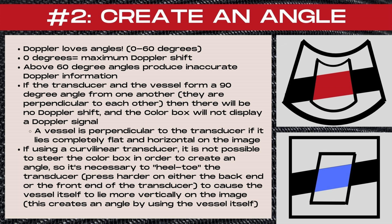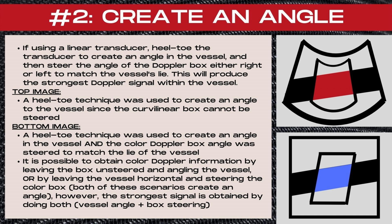If you're using a curvilinear transducer, it's not possible to steer the color box to create an angle, so it's necessary to heel-toe the transducer. This means pressing harder on either the back end or the front end of the transducer to cause the vessel itself to lie more vertically on the image, creating an angle by using the vessel itself. If you're using a linear transducer, you want to both heel-toe the transducer to create an angle in your vessel and also steer your color box either to the right or to the left to match the lie of the vessel, producing the strongest Doppler signal. The top image displays a vessel where the heel-toe technique was used with a curvilinear transducer. In the bottom image, a heel-toe technique was also used and the color Doppler box angle was steered to match the lie of the vessel.